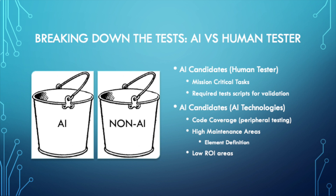We do that by taking the tests and breaking them down into two buckets: we have the AI candidates and the non-AI candidates. Those non-AI candidates are really the actions performed by the human tester — the mission critical scripts, the required test scripts we need to write to validate the feature in our current sprint. These are extremely important and are never really going to be handled by the AI.